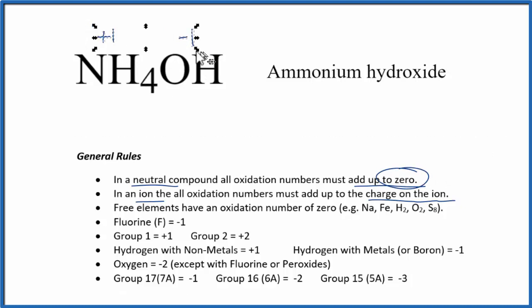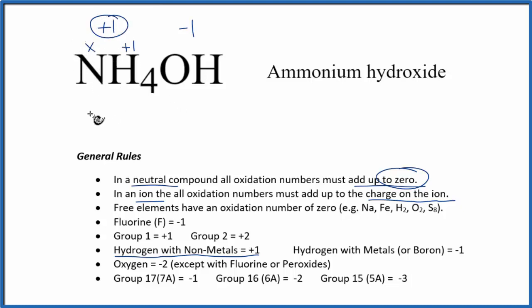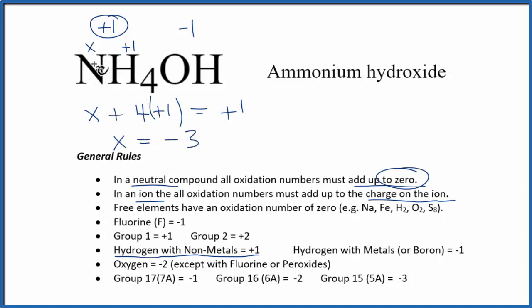Let's figure out the oxidation numbers for each individual element in NH4OH. Starting with the NH4 ion: we don't know what nitrogen is, so we call it X. Hydrogen bonded to nonmetals is plus one, so each of the four hydrogens is plus one, and the whole ion has a charge of plus one. Setting up the equation: X plus 4(+1) equals +1. So X plus four equals one; subtract four from each side, and X equals minus three. That's the oxidation number on nitrogen.